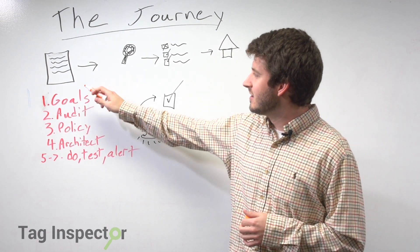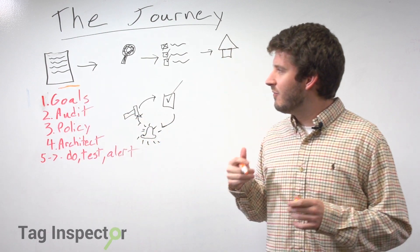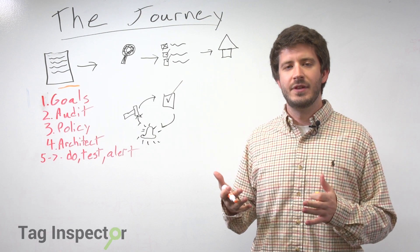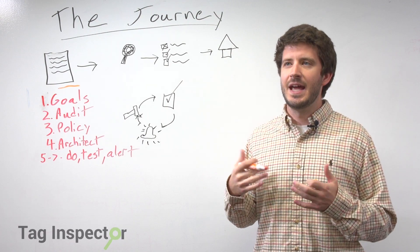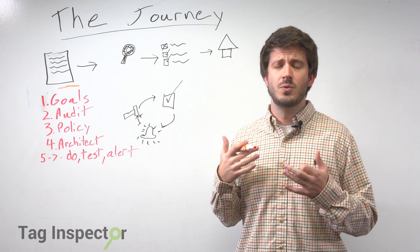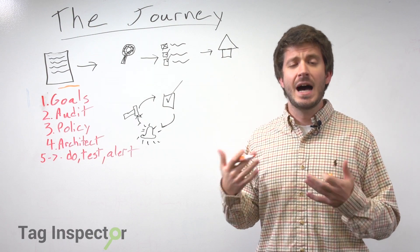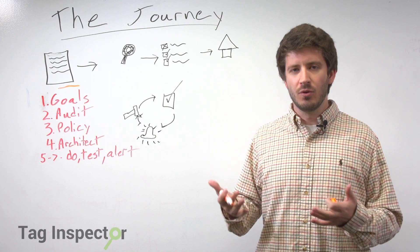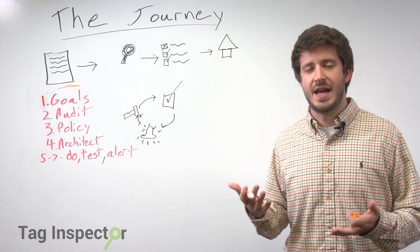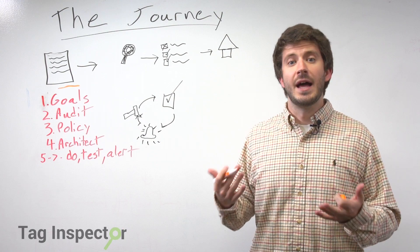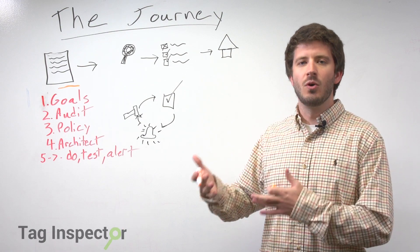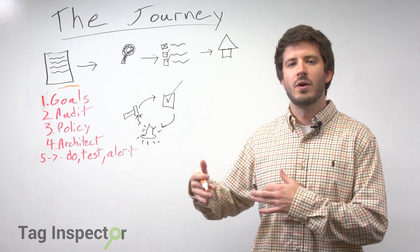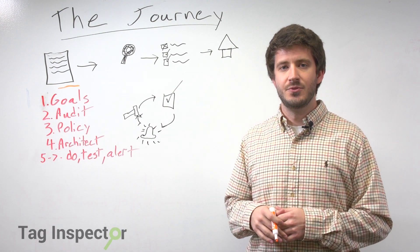The first piece here is our goals. If we don't have a really good idea of what the goal of the initiative is — is it an analytics implementation, are we trying to optimize our website for performance, or is there a new legal and privacy initiative that we need to make sure all of our tags are compliant within — we need to know what the goal of the process is, and then we can start determining what steps to take to get there.